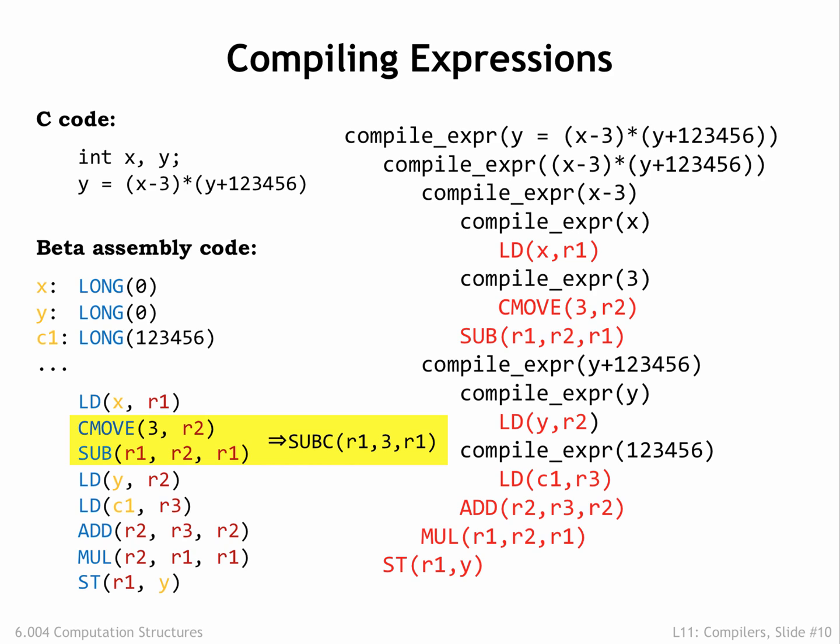There's even an opportunity to find some simple optimizations by looking at adjacent instructions. For example, a CMOVE followed by an arithmetic operation can often be shortened to a single arithmetic instruction with the constant as its second operand. These local transformations are called peephole optimizations since we're only considering just one or two instructions at a time.